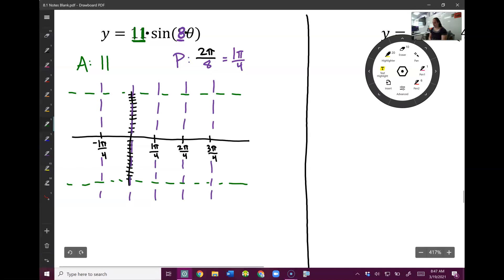Our amplitude is 11, so I go up 11 from my middle line, down 11 from my middle line. My period is π fourths, so I did 1π fourths, 2π fourths, 3π fourths, so that all of these are π fourths wide. That was very poorly drawn. There we go.